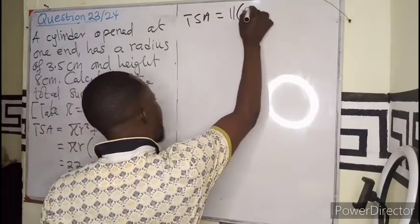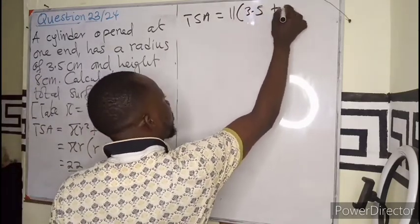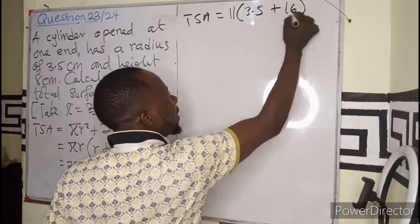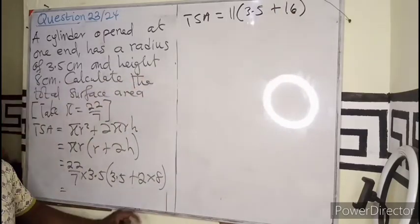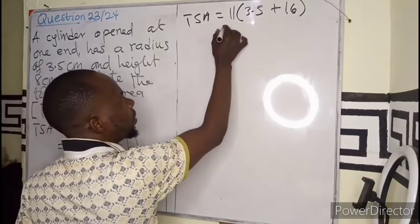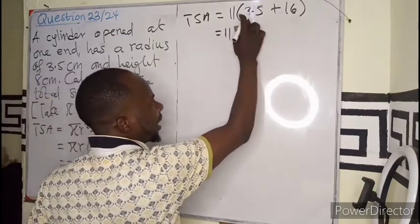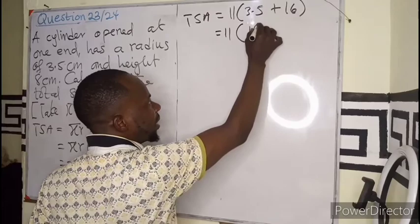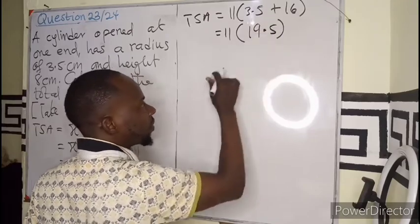Then this will be 3.5 plus 16. 11 is maintained. If I add 3.5 plus 16, it will give me 19.5.